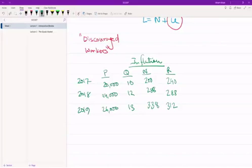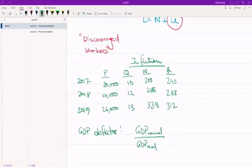So let's start off with GDP deflator. Computing GDP deflator is pretty straightforward for any given year. GDP deflator will be given by the nominal GDP divided by the real GDP. So if we're doing this for 2017, what we get is 200 divided by 240, which gives us 0.87.